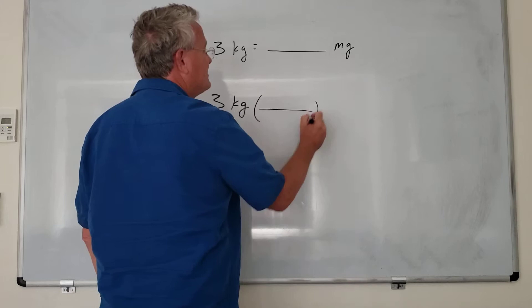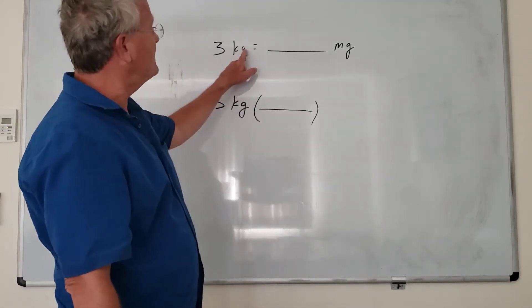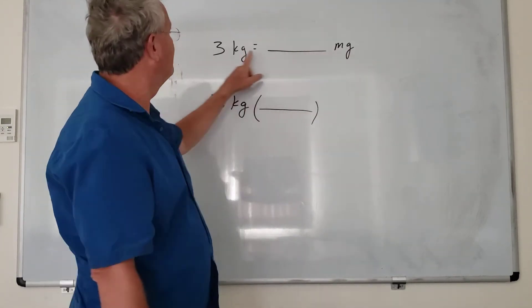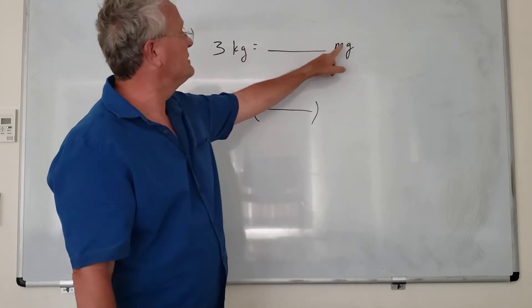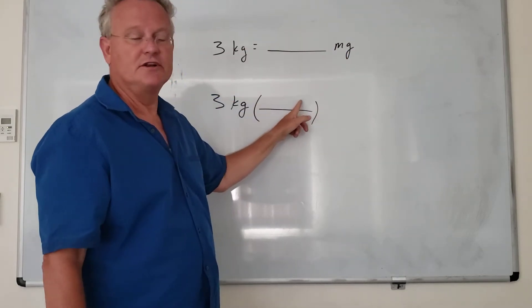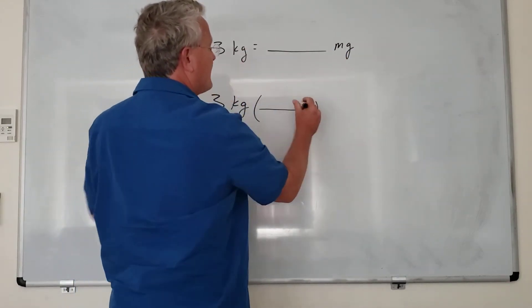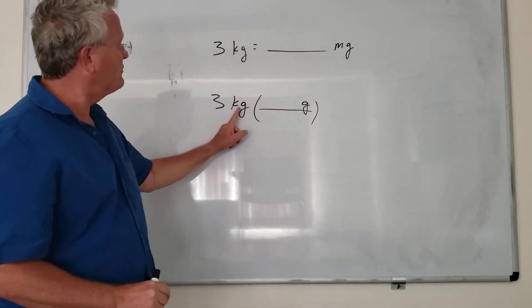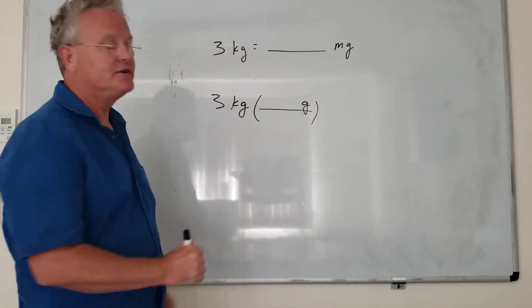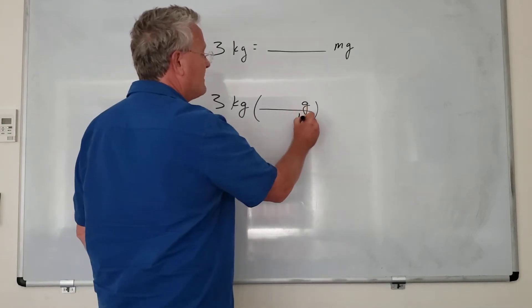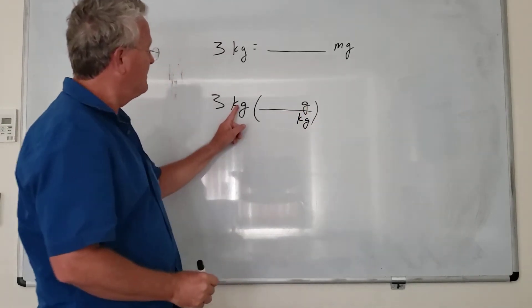Our basic unit in this case is grams. If this was kiloliters and milliliters, we would put liters here, but in this case it's grams. We want grams here. Whatever unit this is, we want to put that in the denominator, so we put kilograms down here. Why do we do that? Because they're going to cancel.